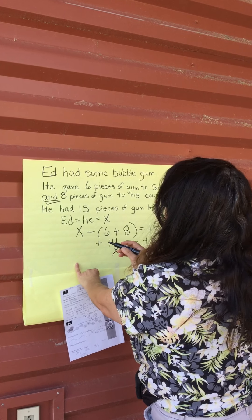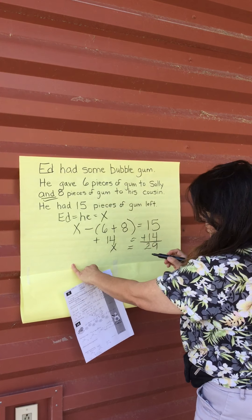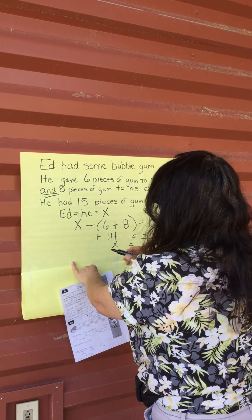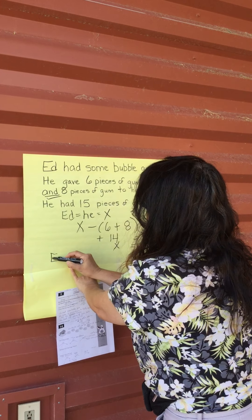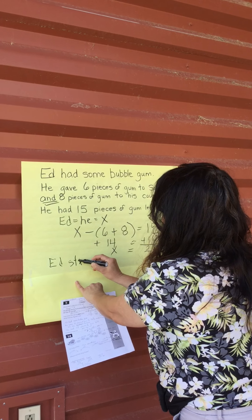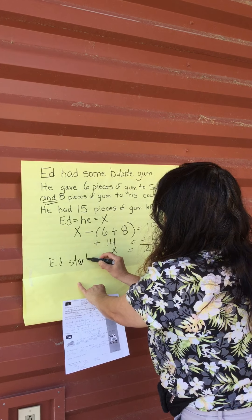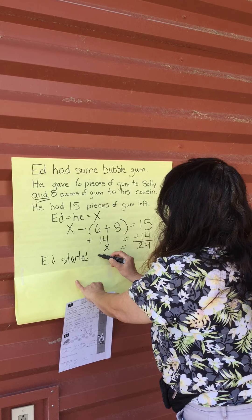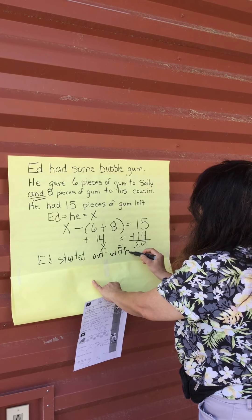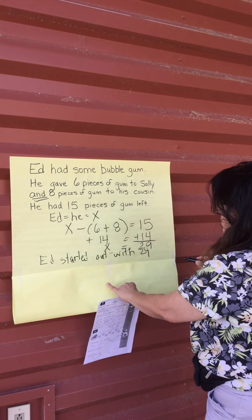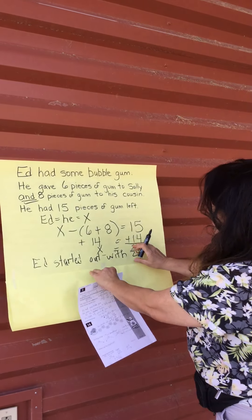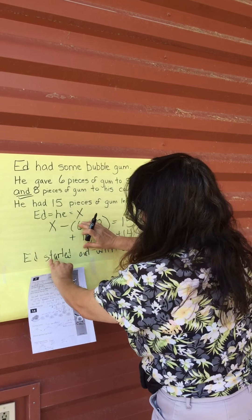Ed had some bubble gum — how many pieces of bubble gum did he start out with? Ed started out with 29 pieces of gum. That's the first one. Now we're going to go work on the second one.